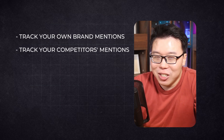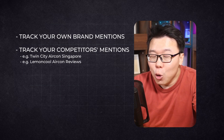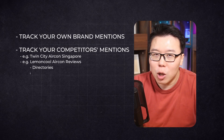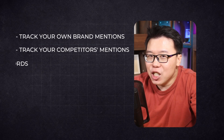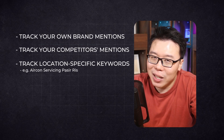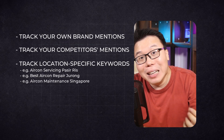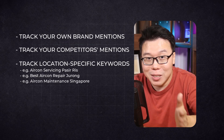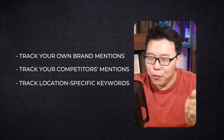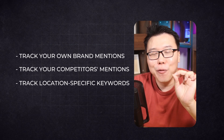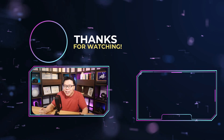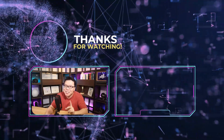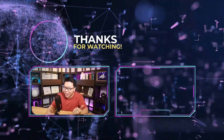Additionally, track your competitors' mentions — such as 'Twin City AirCon Singapore' or 'Lemon Cool AirCon Reviews' — to see which directories or blogs talk about them, and get your business mentioned there as well. Track location-specific keywords like 'AirCon Servicing Pasir Ris,' 'Best AirCon Repair Jurong,' and 'AirCon Maintenance Singapore' to see what directories, blogs, or forums mention your service area. Use what you learn from those alerts — relevant keywords, phrases, and words used by customers — to improve your location pages and business profile. These are the local SEO strategies you can implement in the AI search era. If you know other strategies that work, let us know in the comments. This is Jack from RankMath — I'll see you in the next video.